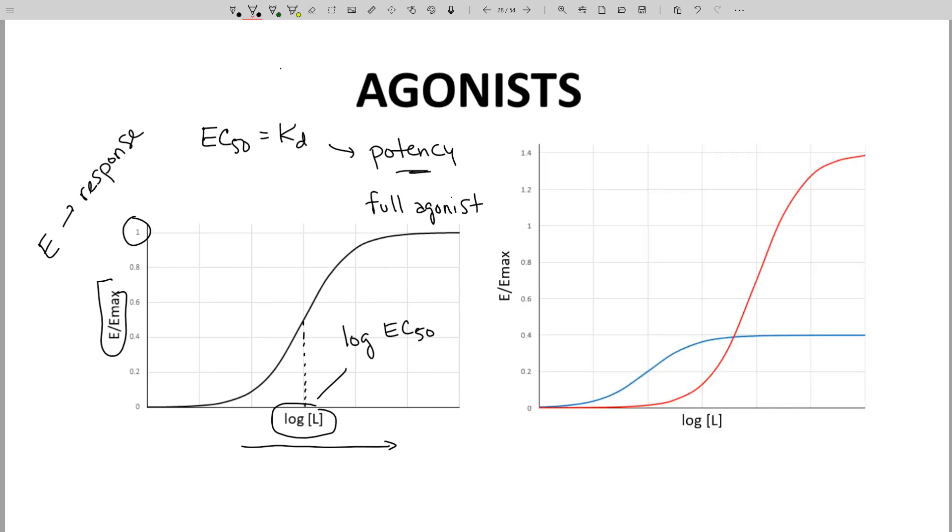Not all agonists are full agonists. Some agonists bind and cause less than a full response. An example is the blue line. This is a partial agonist. Its max response is 40% or 0.4.